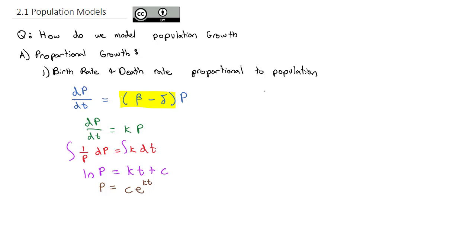We can solve for that constant C by saying at time 0 the population is some initial population, which means our equation becomes P₀ is equal to C times e to the 0, which is 1. So I know then that the initial population is that constant, and we end up with this final formula for our population growth: the population is equal to the initial population times e to the kt.